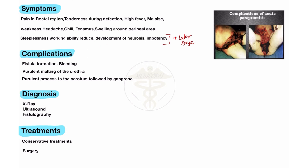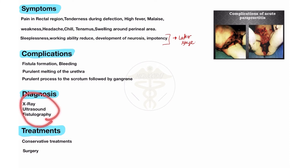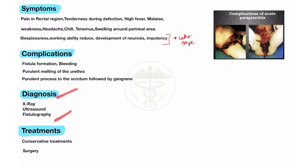Diagnosis of Paraproctitis: first, physical examination — checking the region of the rectum and anal canal, assessing inflammation, pain, and swelling by palpation. When the doctor is not confirmed by physical examination, they will also perform X-ray, ultrasound examination, and fistulography to diagnose Paraproctitis.